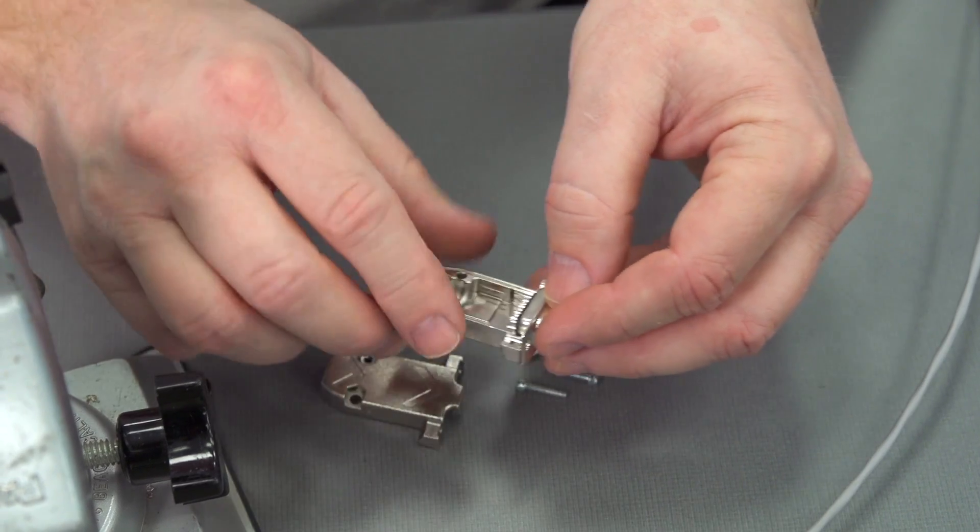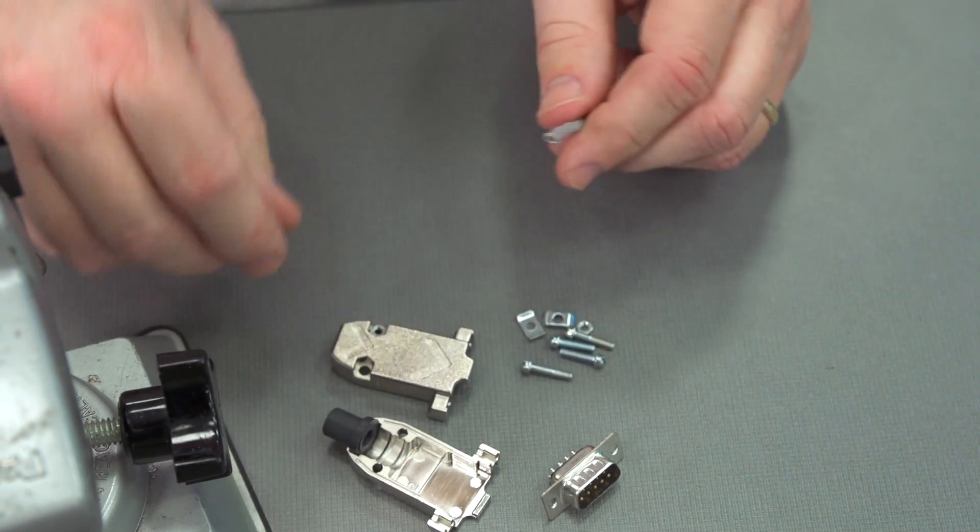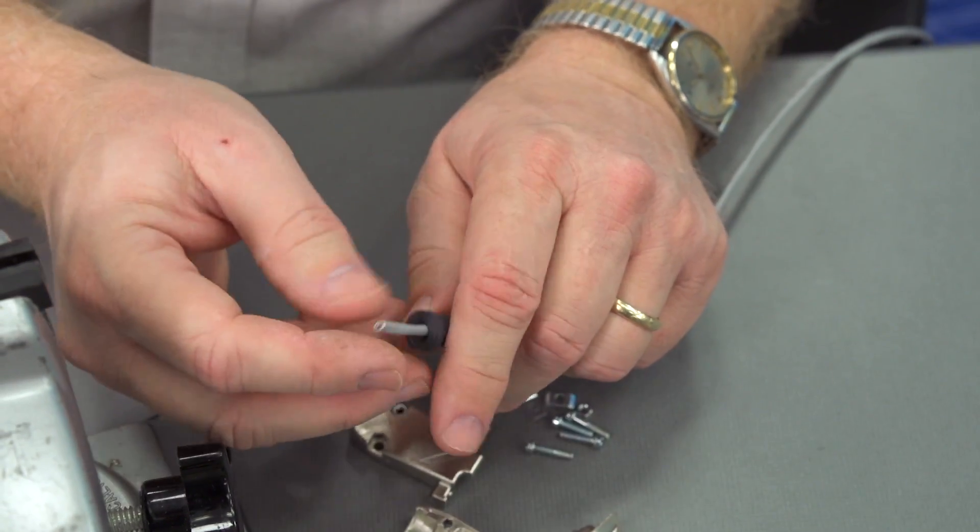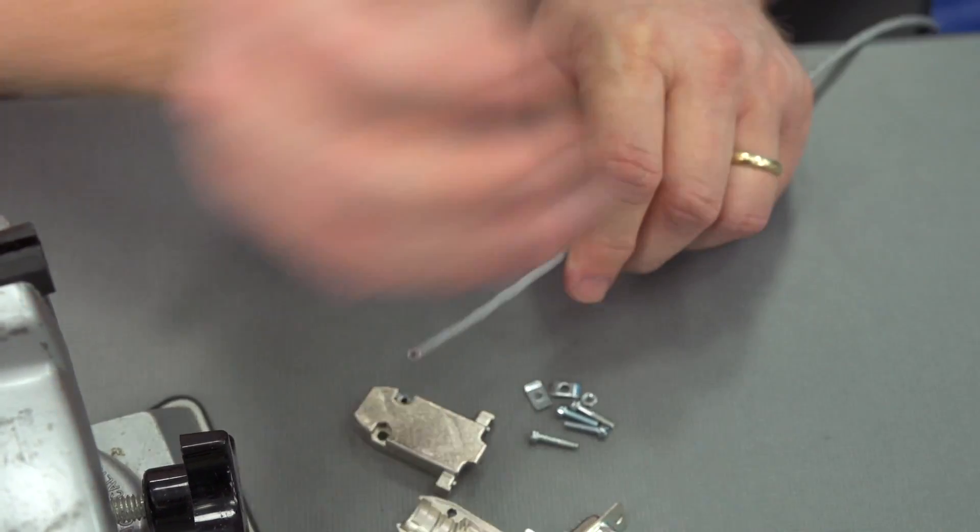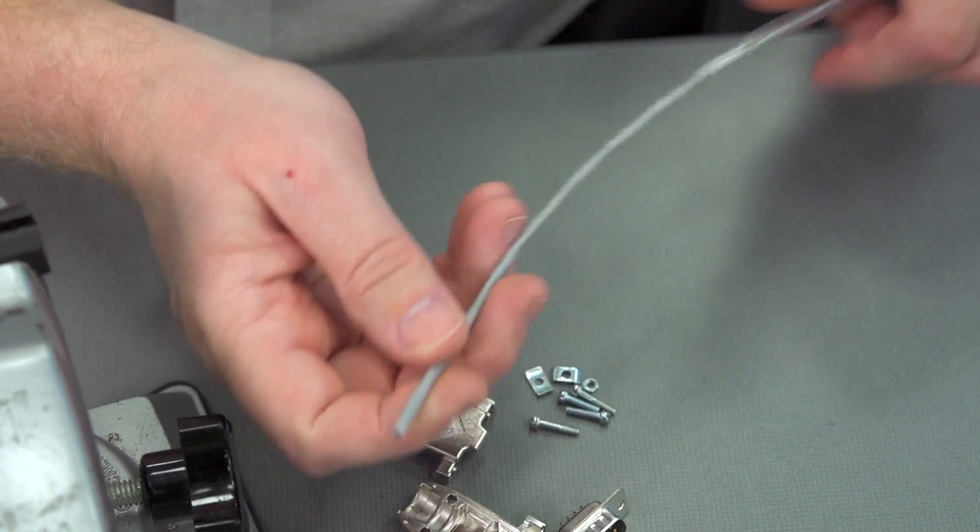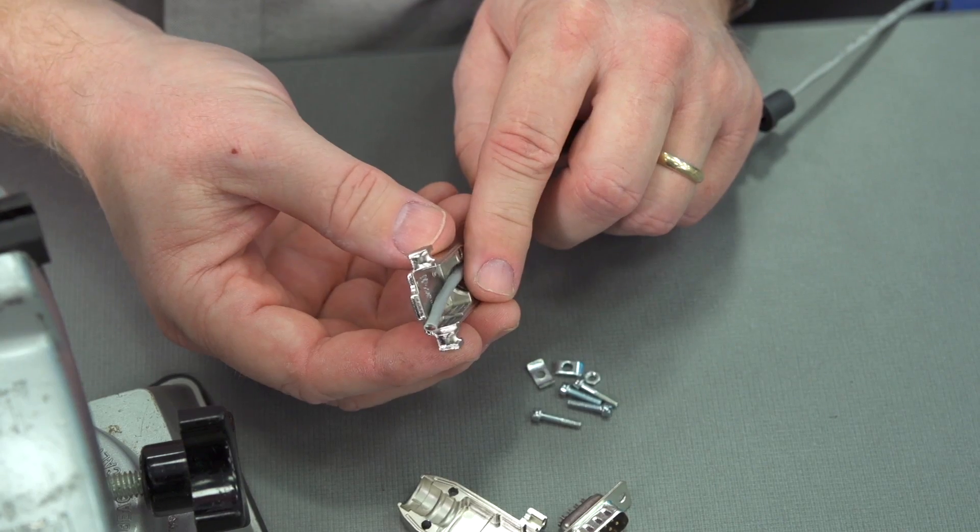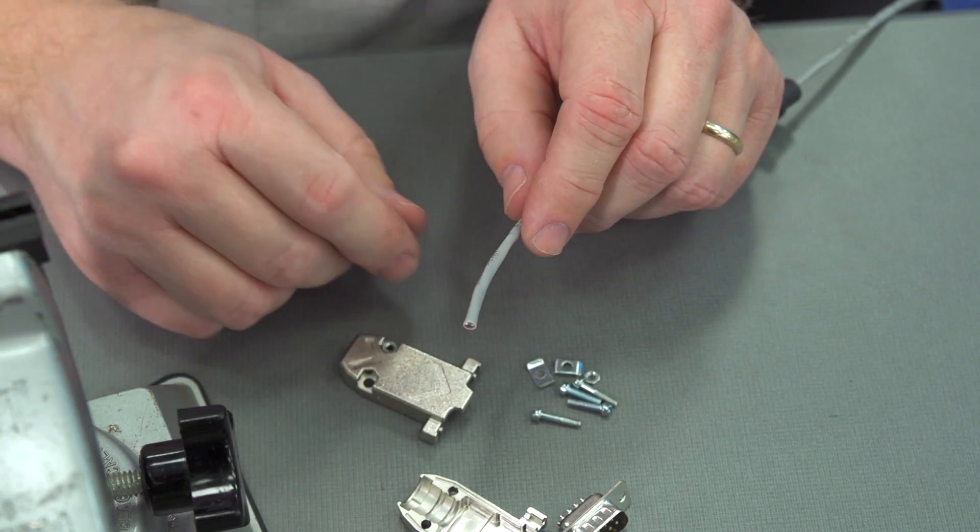Let's go ahead and begin by preparing our cable. Like the rest of the cables we do, we want to make sure that we have things like our strain relief on, and also make sure that our heat shrink is on. So we're going to make sure all of that is on before we start. Since this is a half shell arrangement, we can put this on after we do our solder work here.